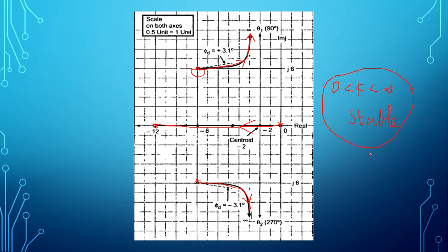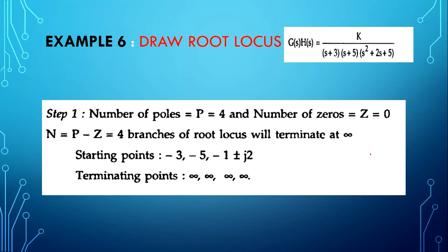Next example — the sixth. The given open loop transfer function has 4 poles: s = -3, s = -5, and two complex poles at -1 ± j2. Since P > Z (no zeros present), the number of root locus branches is 4. All root locus branches start from the open loop pole locations and approach to infinity, since there is no zero present.